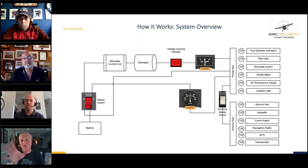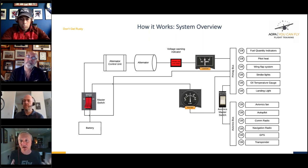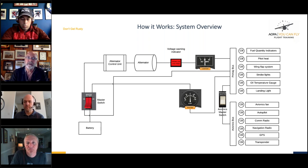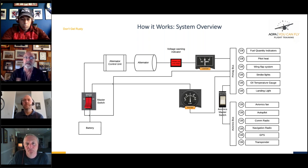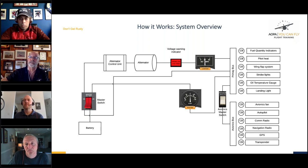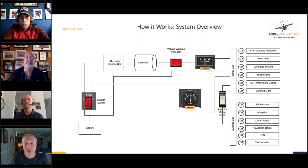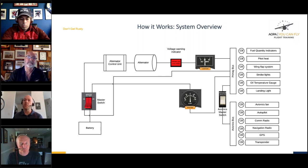Keith compares this to his home's circuit breaker panels. Jamie: 'I like to think of a bus as the main street, with side streets going off that are smaller. The main street carries a lot of electricity, and off the side streets go the fuel gauges, turn coordinator, lighting, and so on. We have circuit breakers where we can take any one of those little streets out, but the master switch can take the entire bus out.' And then there are the switches on individual pieces of equipment, which we'll cover when we talk about shedding load.